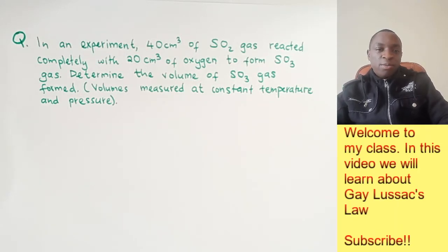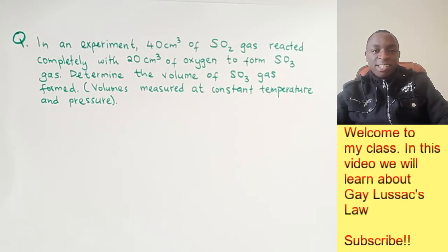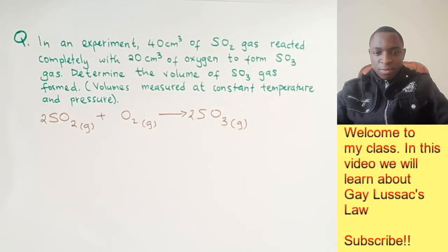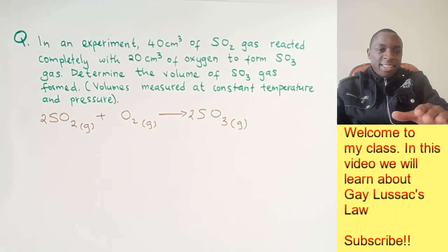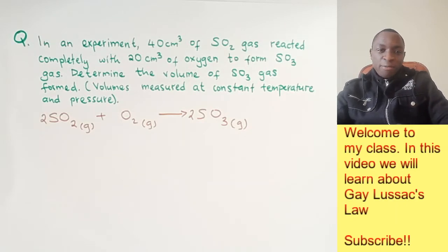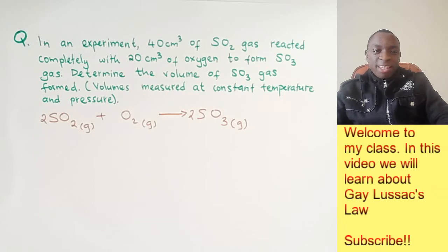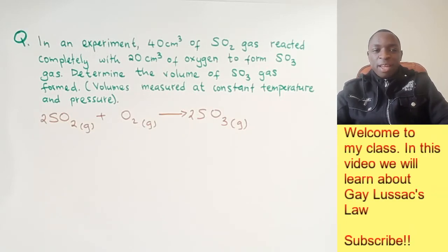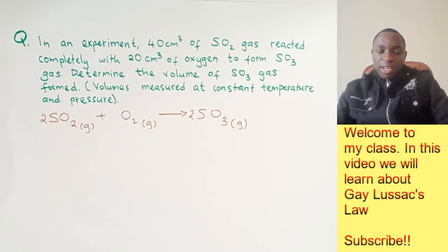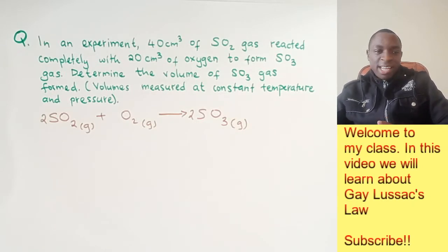How do you go about this question? The very first thing you need to do is write the equation between sulfur-4 oxide and oxygen gas. If you don't know how to write these chemical equations, please check out my other videos that show you how to write and balance chemical equations. According to Gay-Lussac's law, when gases react, they do so in a simple ratio.